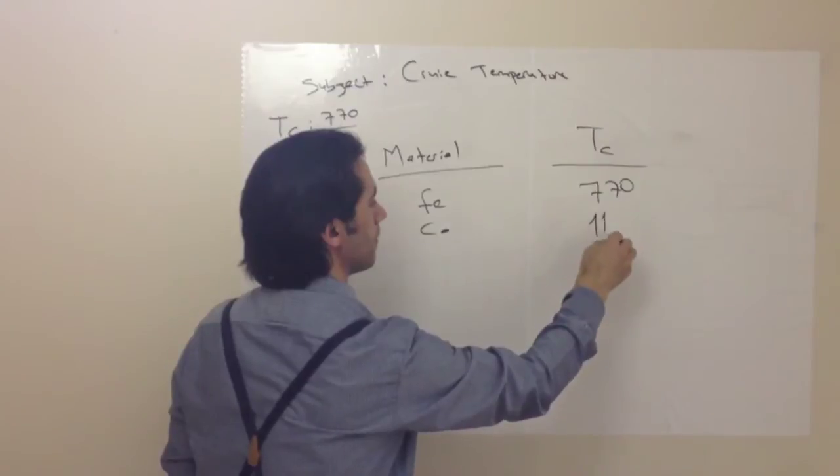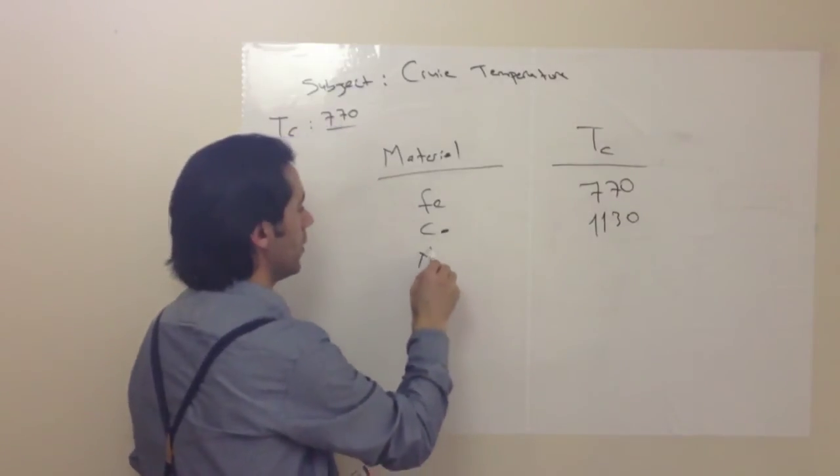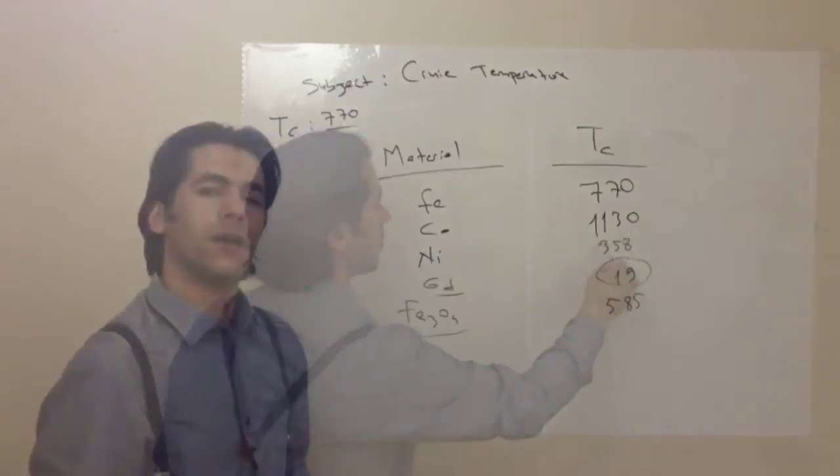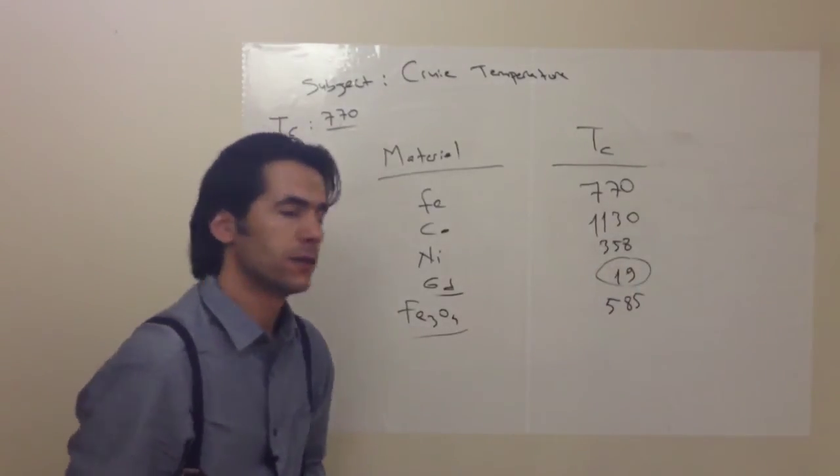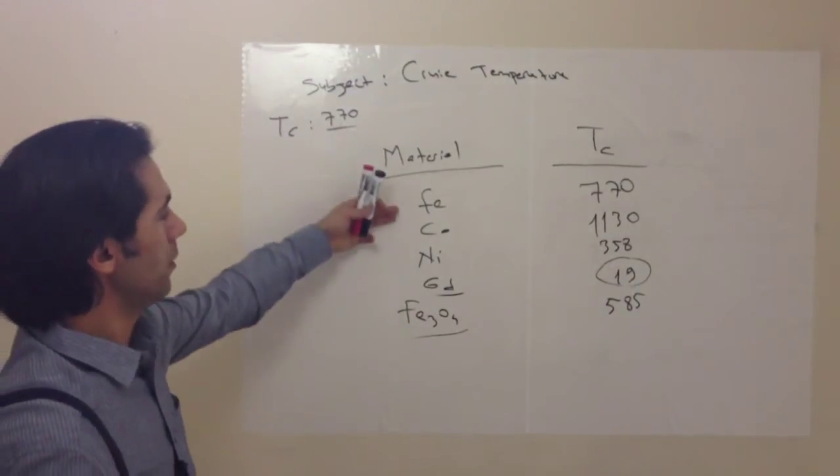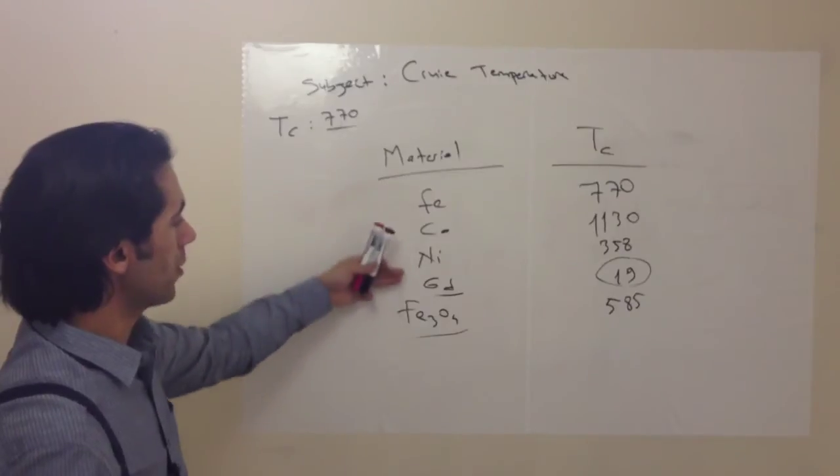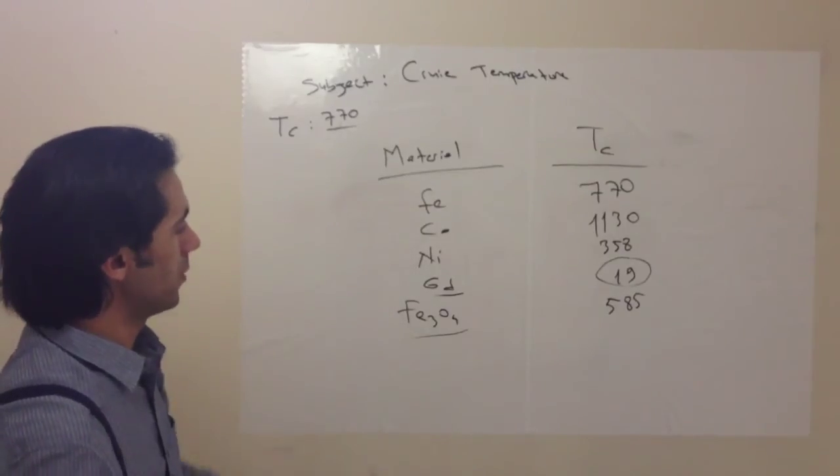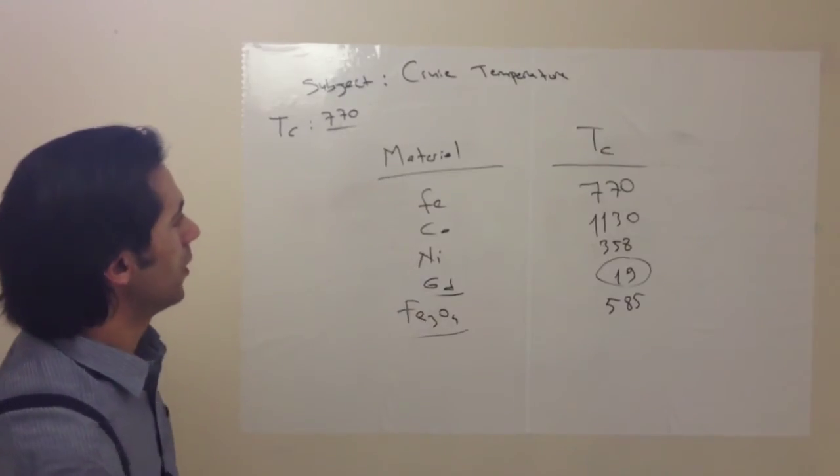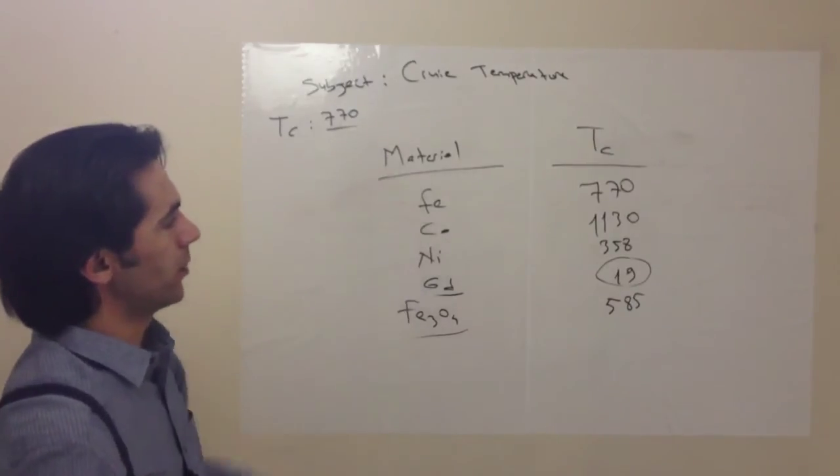Iron, cobalt, nickel, gadolinium, and magnetite iron oxide. Now I wrote some examples such as iron, cobalt, nickel, gadolinium, and magnetite iron oxide. As you see, they have different Curie temperatures.